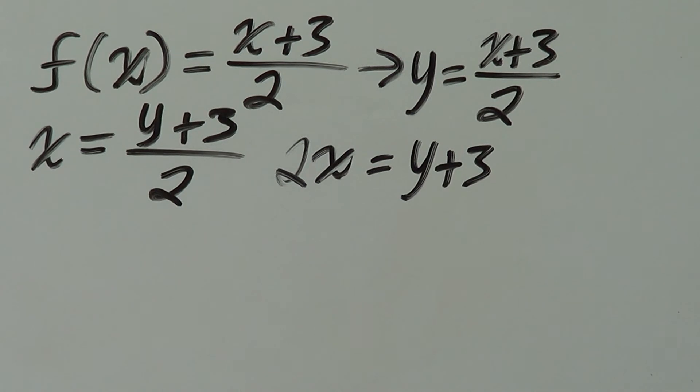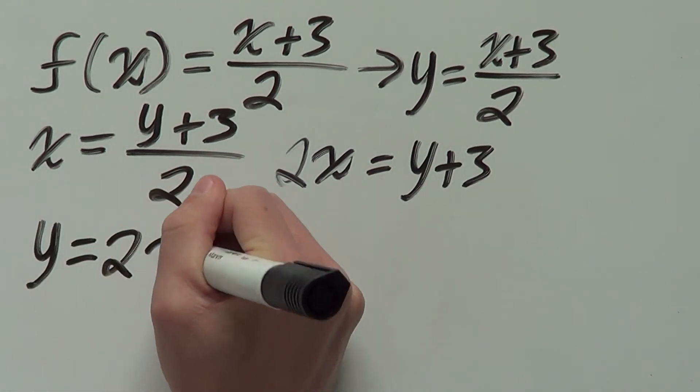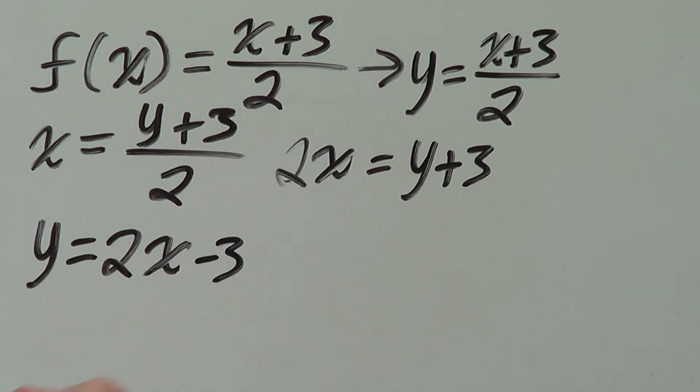To get y by itself, subtract both sides by 3. We can have y equals 2x minus 3.